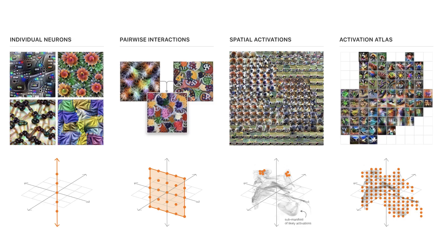To categorize what I've been showing: when we think of the activation space of a neural network as a vector space, individual neurons and their visualizations correspond to basis directions of that vector space. The pairwise interaction diagram corresponds to planes of those neurons in activation space. The spatial activation grids correspond to a set of points in activation space — specifically ones lying on the sub-manifold of likely activations coming from the natural data distribution. If we want to understand that entire manifold, we use a technique called activation atlas.